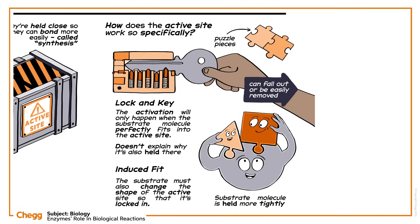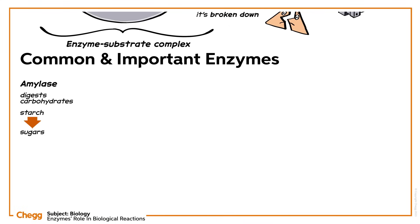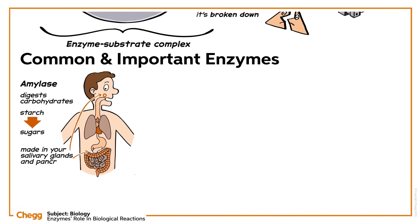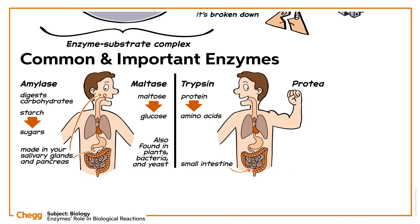Now let's look at some specific enzymes, focusing on ones which are particularly common or particularly important. Amylase helps to digest carbohydrates, specifically helping to change starch into sugars via hydrolysis — it's made in your salivary glands and pancreas, beginning the chemical process of digestion as soon as food is in your mouth. Maltase, also produced by the pancreas and salivary glands, helps to break maltose into the simpler sugar glucose, and is also found in plants, bacteria, and yeast. Trypsin catalyzes the breakdown of proteins in the small intestine, breaking them into amino acids. Protease also helps to break down proteins into single amino acids through hydrolysis, aiding protein catabolism and therefore body growth and cell signaling.